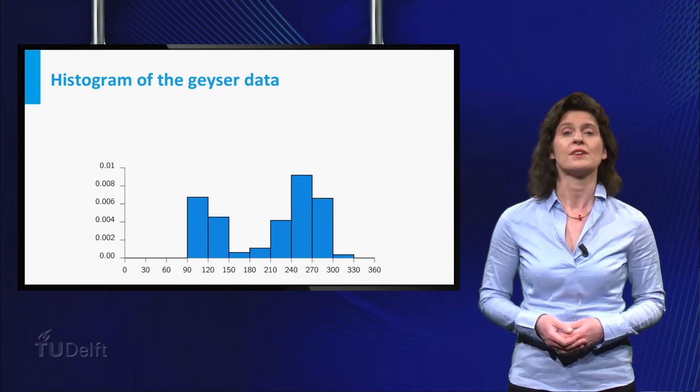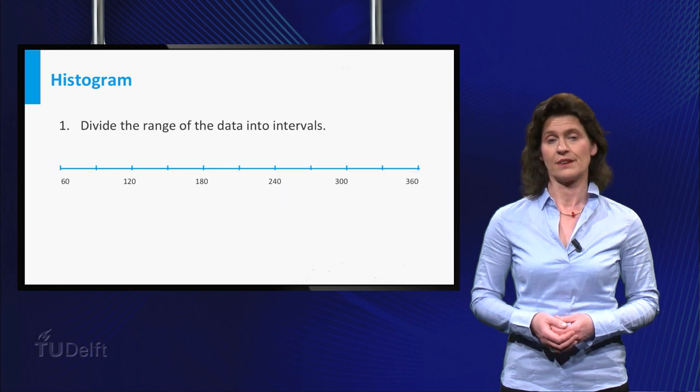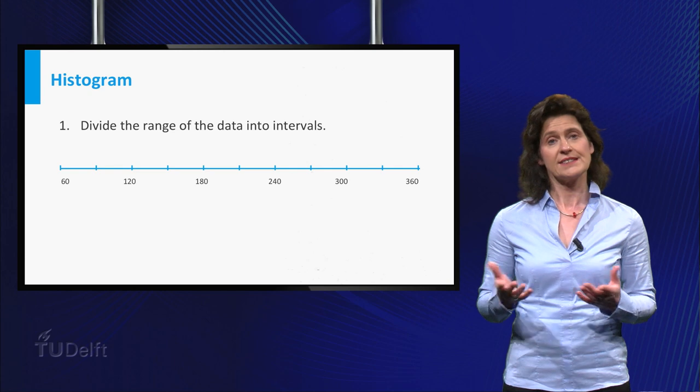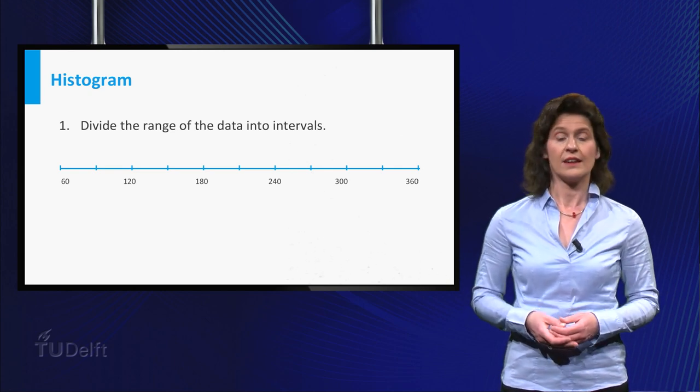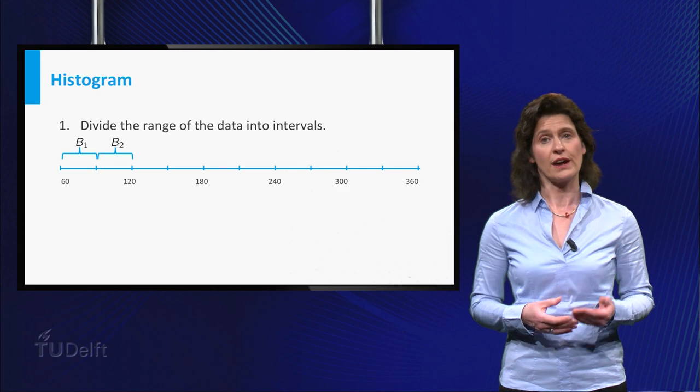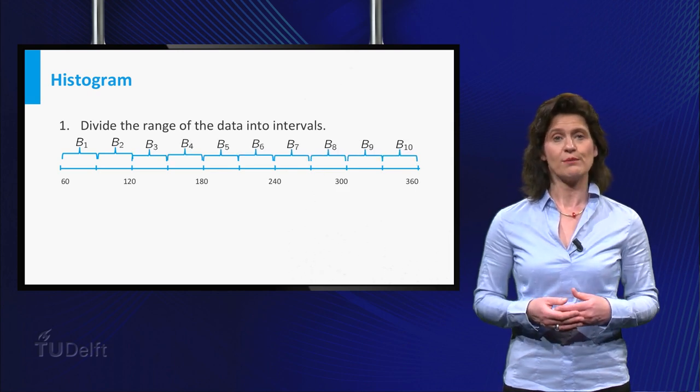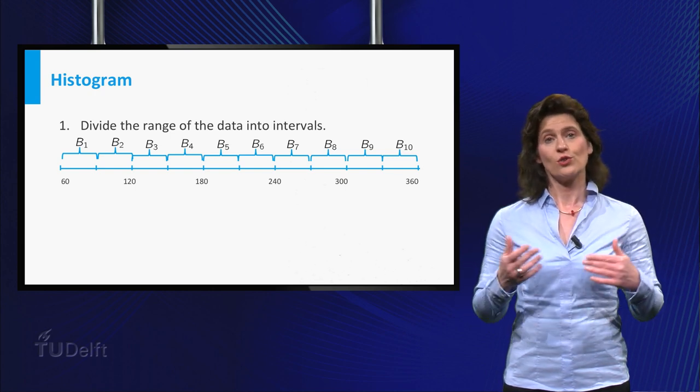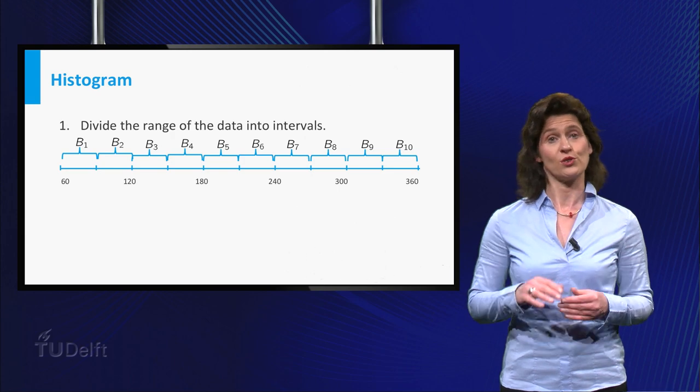Here is a histogram of the data. How do you draw such a histogram? First, divide the range of the data into intervals. In this case, let's take intervals of a width of 30 seconds. Denote the intervals by B₁, B₂, until B₁₀. The histogram is a function that is constant on these intervals, so in order to draw the histogram, you will only need to determine the value of the function on these intervals.